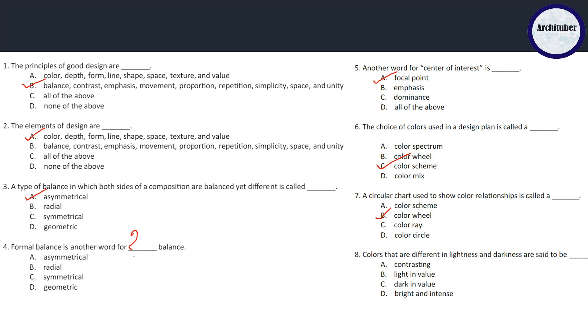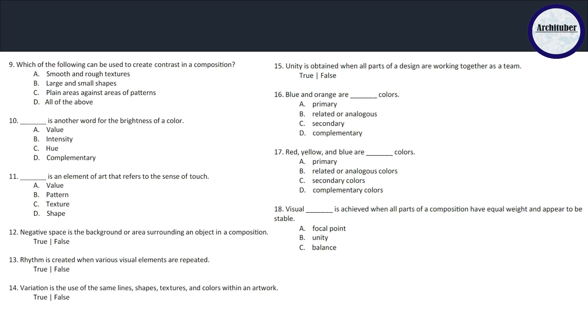Eighth question: colors that are different in lightness and darkness are said to be contrasting - not light in value, not dark in value, neither bright or intense, it is contrasting. Lightness and darkness means contrasting. Ninth question: which of the following can be used to create contrast in a composition? Smooth and rough textures, large and small shapes, plain areas against areas of patterns - basically all are contrasting elements to each other, so all of the above is the answer.